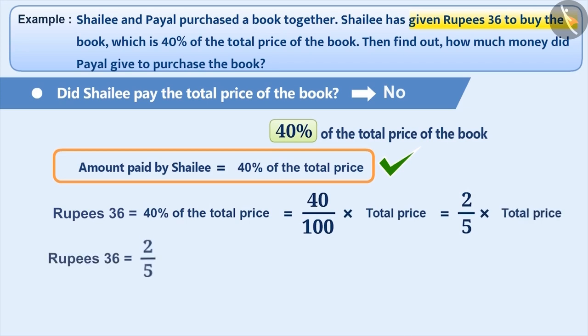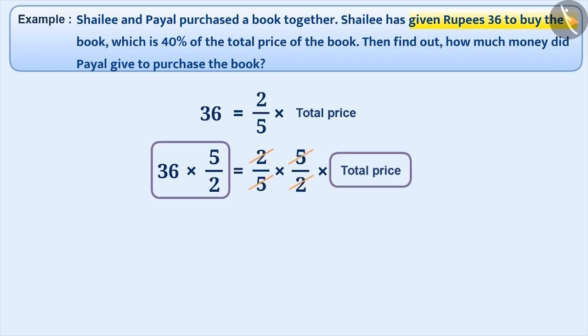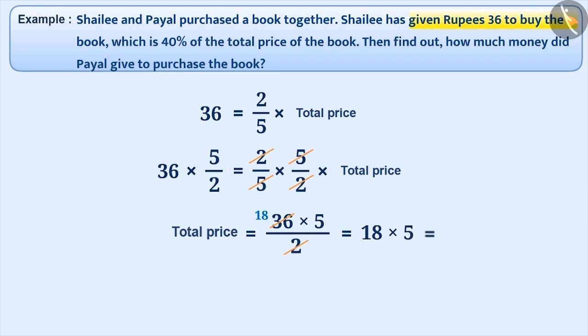That means, Rupees 36 is equal to 2 fifth into the total price. If we multiply left-hand side and right-hand side by the reciprocal of 2 by 5, that is 5 by 2, then we get 36 into 5 by 2 is equal to 2 by 5 into 5 by 2 into total price. That means, 36 into 5 by 2 is equal to the total price. Therefore, total price is equal to 36 into 5 divided by 2 or 18 into 5, which is Rupees 90.